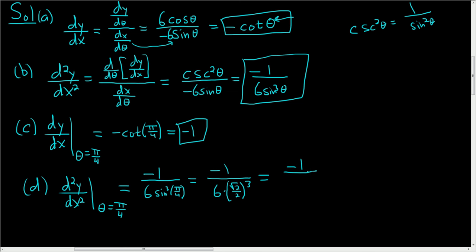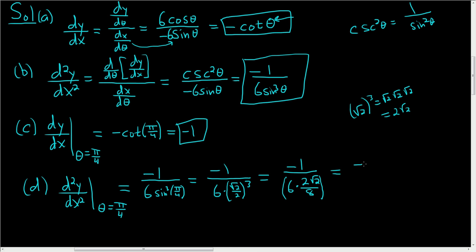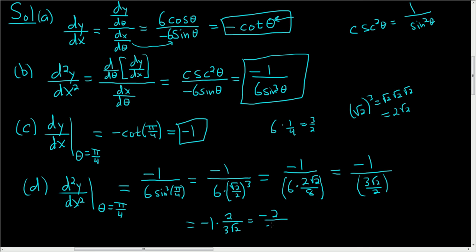We have to be careful simplifying. Cubing √2/2 means cubing the √2 part: √2 · √2 · √2 = 2√2, and cubing the 2 in the denominator gives 8. So the denominator is 6 times 2√2 over 8, which is 6 times 1/4, which is 3/2. So the full expression becomes negative 1 times the reciprocal of 3√2/2, giving us negative 2 over 3√2.